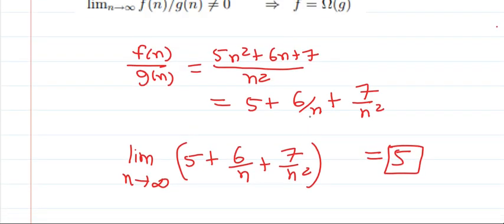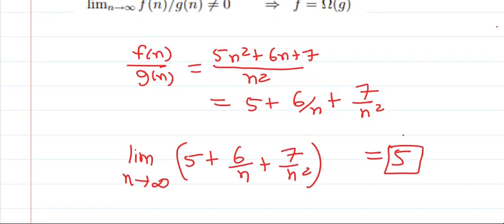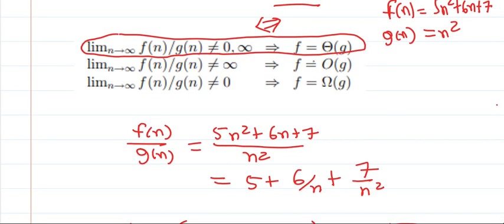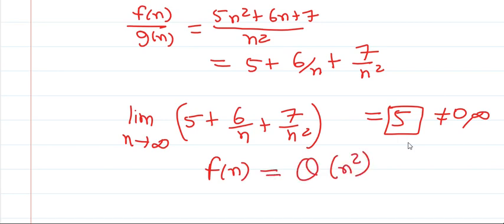The meaning of this result is that the growth rate of f(n) is approximately five times that of g(n). Since this is a constant term, if we take g(n) / f(n) we also get a constant (1/5). Therefore we can say f is Theta of g. The conclusion is: because we are getting a constant that is neither zero nor infinity, we can say f(n) belongs to Theta of n².